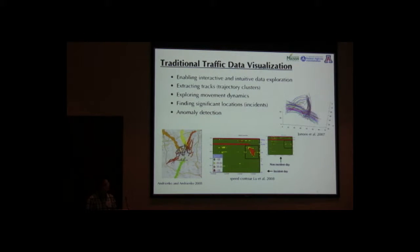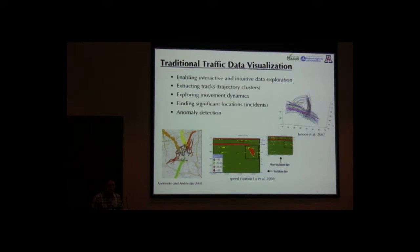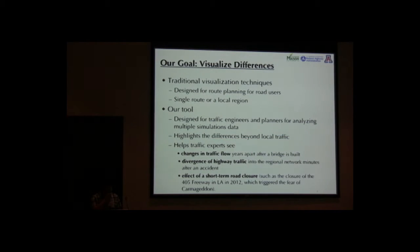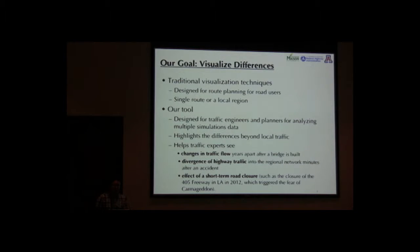Traditional traffic data visualization enables interactive and intuitive data exploration. It can extract clusters, explore movement dynamics, find significant locations such as incidents, and detect anomalies. However, many traditional visualization techniques are designed for road planning or for road users, and some are designed for engineers, with many focusing on single roads and local regions.